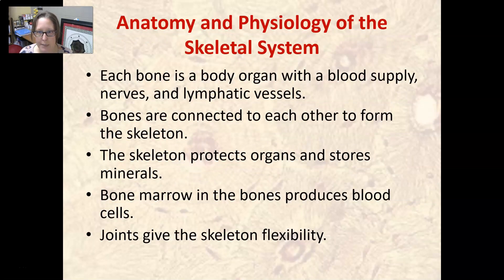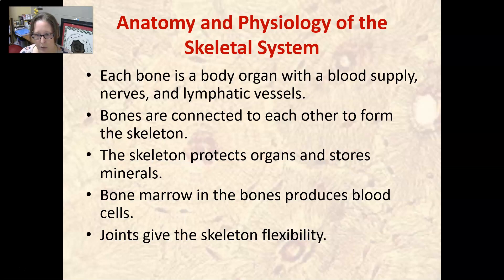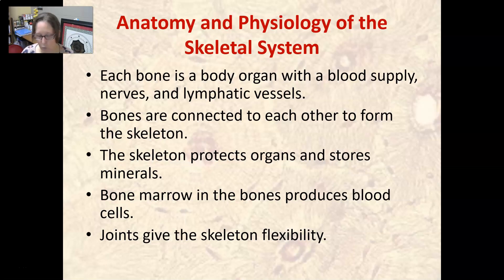Each bone is a body organ — it has a blood supply, nerve supply, and lymphatic vessels. Bones are connected to each other via ligaments to form the skeleton. The skeleton protects the organs and stores minerals, bone marrow produces blood cells, and the joints give the skeleton its flexibility and allow for movement.